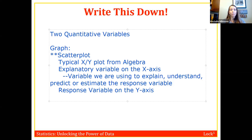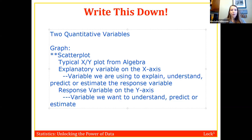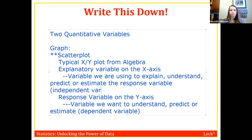The response variable is what we're interested in understanding — it's what we want to predict or estimate. The response variable is sometimes called the dependent variable, and the explanatory variable is sometimes called the independent variable. You might have heard that terminology in a science class.